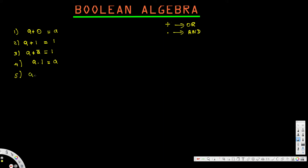For a · 0: in an AND gate, if any input is zero the whole thing is zero, so a · 0 = 0. For a · ā: if a is one then ā is zero, and if a is zero then ā is one — in either case there is a zero present, and in an AND gate that makes the whole thing zero. So a · ā = 0.